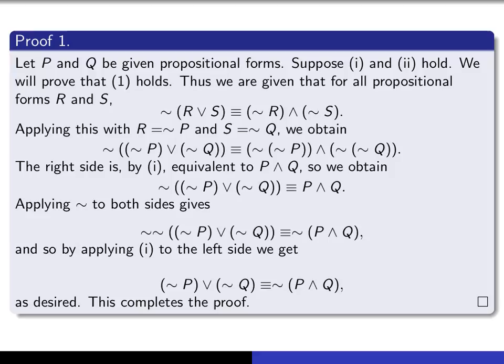So the right side is by i equivalent to P wedge Q. See, because it's not not P here and it's not not Q here. And so we obtain this. So all I've done is I've copied this down again, but instead of writing this, I wrote P wedge Q.